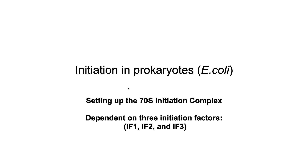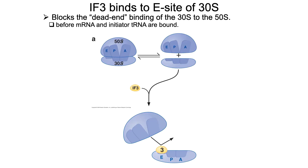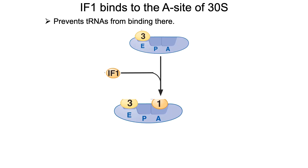Initiation in prokaryotes depends upon three important initiation factors: IF1, IF2, and IF3. IF3 binds to the E site of the small subunit and remains bound there in the absence of messenger RNA. What it does is inhibit the large subunit from binding — we don't want the two subunits of the ribosome to come together unless we have a messenger RNA there. Initiation factor 1 binds to the A site and inhibits the binding of transfer RNAs to the A site.